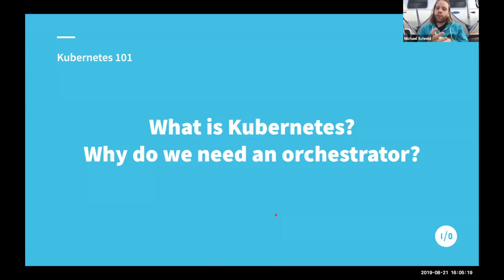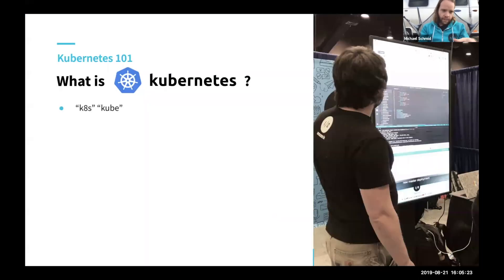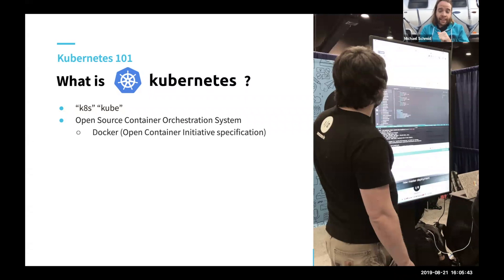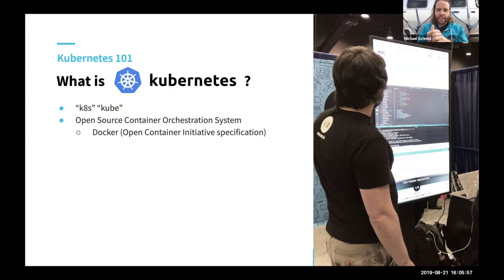So what is Kubernetes? Kubernetes, also called K8s or Kube, is an open source container orchestration system. It is based on Docker — specifically on the Open Container Initiative. Docker has a specification called OCI that defines how a Docker image needs to be set up, and Kubernetes can run these container images.